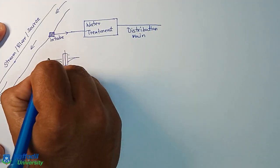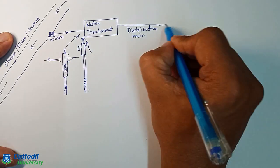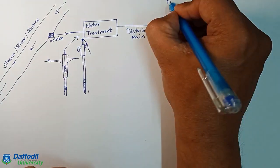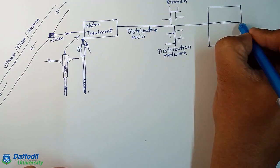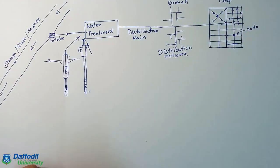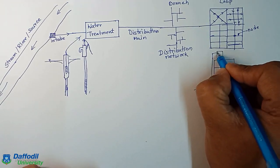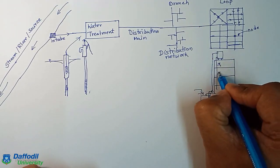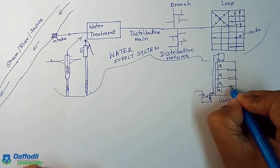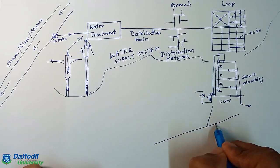For a water supply system, we collect water from nature. The source can be surface water or it can be groundwater. Generally, the water is treated before supplying it to its users through a distribution network.